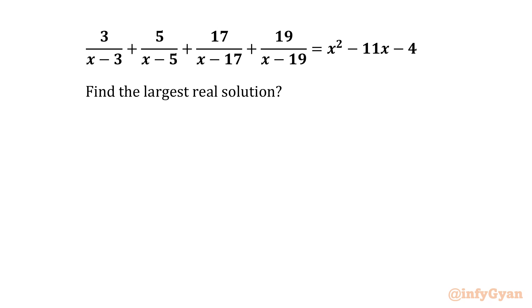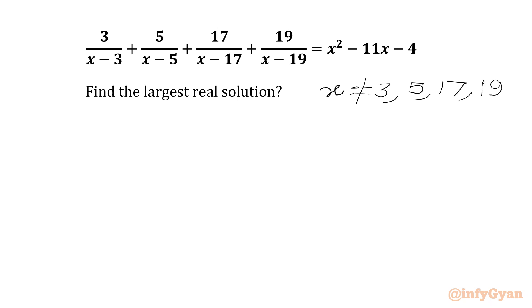Let's get started by writing our denominators cannot be 0. So we can write x cannot be 3, cannot be 5, cannot be 17, cannot be 19.